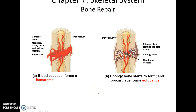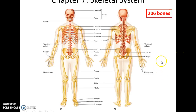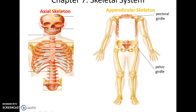If you suffer a fracture, the first thing that happens is blood escapes from broken blood vessels, forming a hematoma — a blood clot. Over time, this clot is replaced with a fibrocartilage callus called a soft callus. That fibrocartilage callus is then replaced by spongy bone tissue called a hard callus, and eventually that is remodeled to give us the expected structure of that portion of the bone.